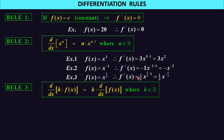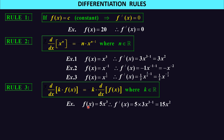Quite often you have a power but you also can have a coefficient. So k times the power would be k times the derivative of the power. Like 5x³: differentiate the power to get 3x², so it becomes 5 times 3x² which is 15x².